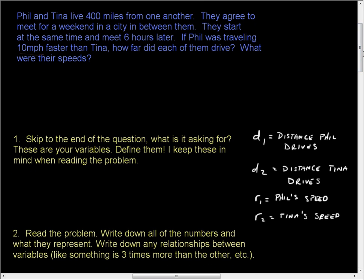Now if we go to step two, it says read the problem. Write down all of the numbers and what they represent. Write down any relationships between the variables — for instance, something is three times more than another. As we look back, they live 400 miles apart. They agree to meet for a weekend in the city between them, so they're traveling toward each other. They start at the same time and meet six hours later.